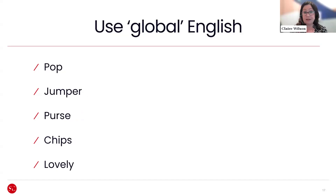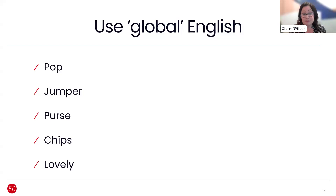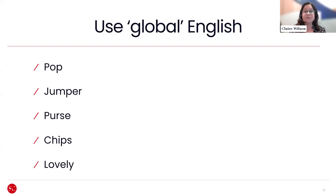Just to reinforce the point about American English versus other forms of English: there are words Americans simply don't use. They don't 'pop to the shops', they don't use 'jumper', they don't say 'purse' — they say 'pocketbook'. There's also chips versus crisps. And some words just sound forced in American English — 'lovely' feels a little twee and cheesy. So this is about having that sense of awareness of how idiomatic our language is, understanding which words don't translate well, and taking a disciplined view of how best to manage that.